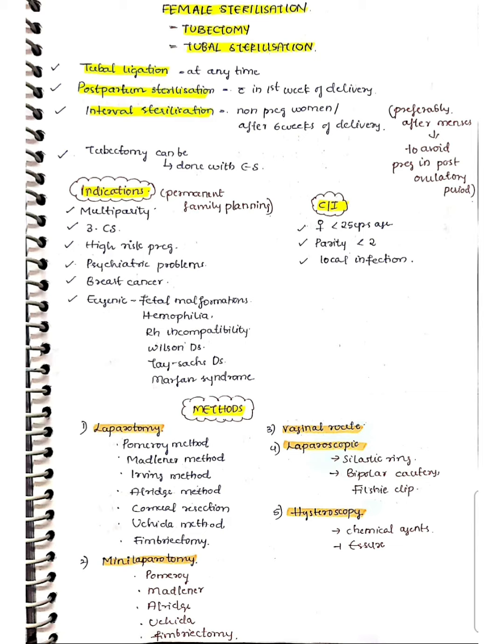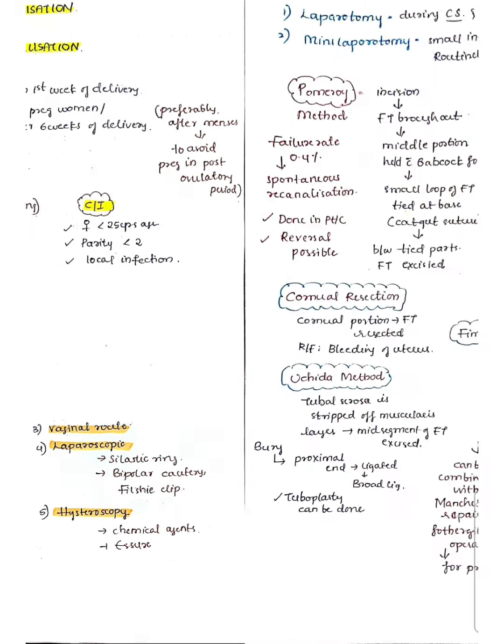There are five methods: laparotomy, mini-laparotomy, vaginal route, laparoscopy route, and hysteroscopy route. Laparotomy includes Pomeroy's method, Madlinus method, Irving's, Aldrich, Cornell resection, Uchida method, and fimbrectomy. Mini-laparotomy also includes Pomeroy's, Madlinus, Aldrich, Uchida, and fimbrectomy. The vaginal and laparoscopic routes use elastic ring, bipolar cautery, and Filshie clips. Hysteroscopy uses chemical agents and plugs.